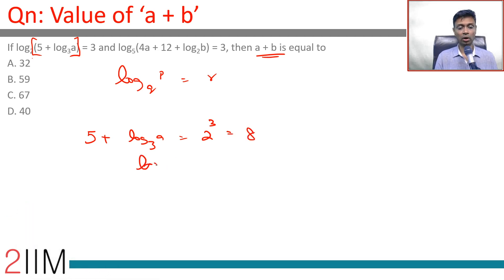Log of something to the base 2 is 3, or that something is 2 cube which is 8. Or log a to the base 3 is 8 minus 5 which is 3, or a is 3 into 3 which is 27.